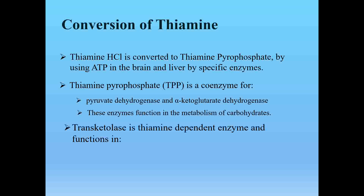Thiamine pyrophosphate (TPP) is a coenzyme for pyruvate dehydrogenase and alpha-ketoglutarate dehydrogenase — two enzymes with very important functions in carbohydrate metabolism. If TPP is not present, these enzymes cannot perform their proper function and carbohydrate metabolism will be disturbed. Trans-ketolase is a thiamine-dependent enzyme that functions in the pentose phosphate pathway (PPP) to synthesize NADPH (nicotinamide adenine dinucleotide phosphate, reduced form).